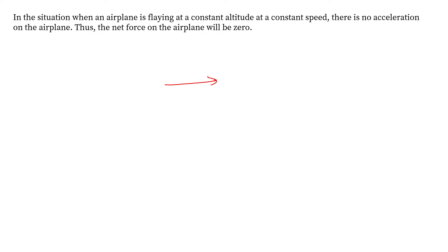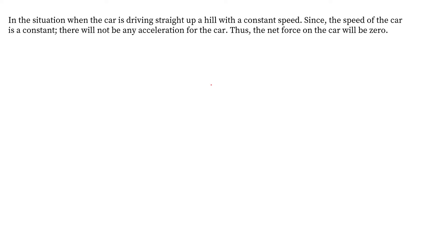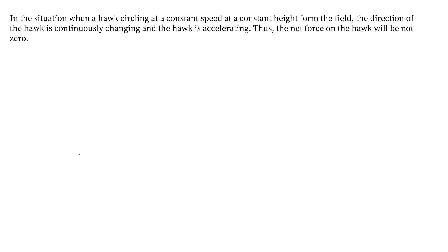Since momentum is constant, the net force applied on the aeroplane is zero. In the second situation, a car is driving straight up a hill at a constant speed. Because the speed is constant, the change in momentum of the car is zero, so the net force acting on the car is also zero.